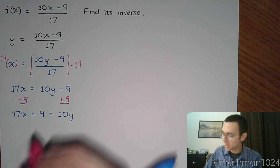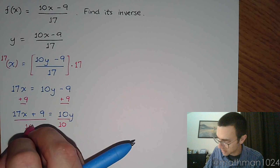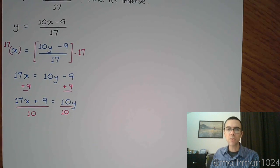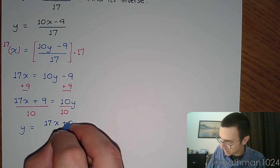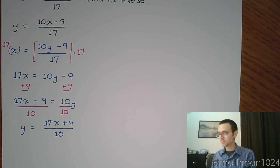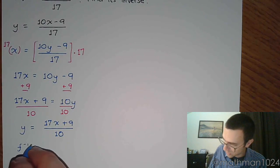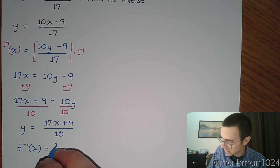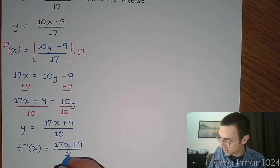So 17x plus 9 equals 10y. And to finish getting y by itself, we divide both sides by 10. And we've already kind of seen how I'd like to go ahead and write y on the left side. So y is equal to 17x plus 9 all divided by 10. But remember how we said that we don't leave it like this. We're going to rewrite this so that y is using the inverse function notation. So f inverse of x is equal to 17x plus 9 all over 10.